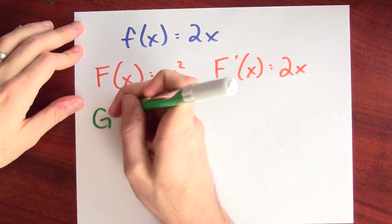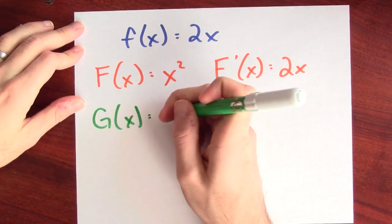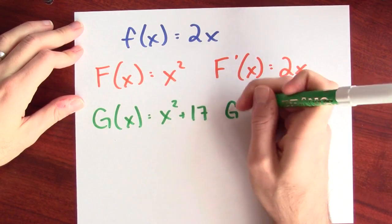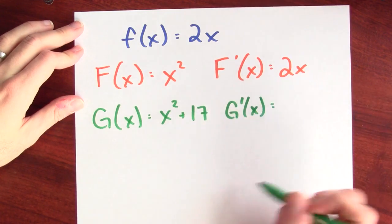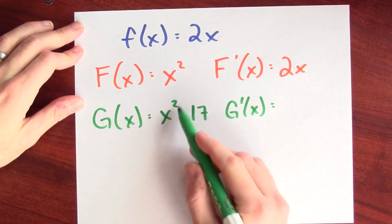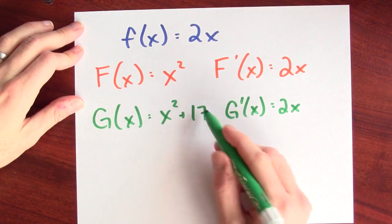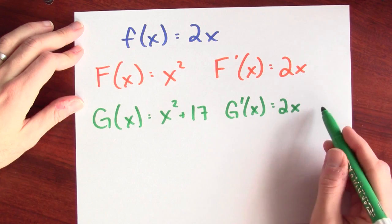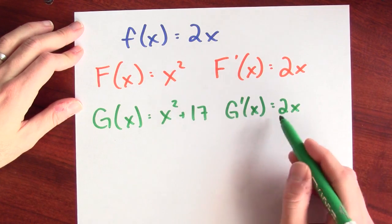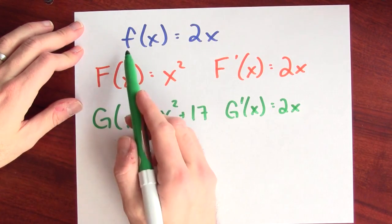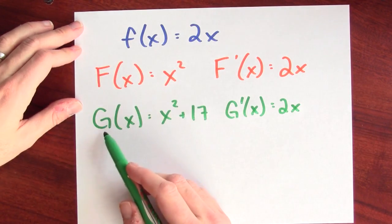Can we think of another function whose derivative is 2x? Think about G(x) = x² + 17. G's derivative is the derivative of the sum: the derivative of x² is 2x, plus the derivative of 17, which is 0. So big G differentiates to little f, meaning another antiderivative for little f is big G.